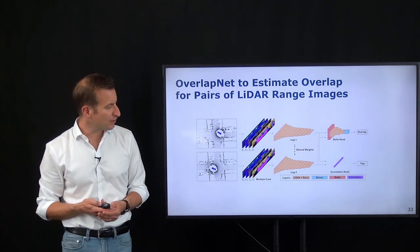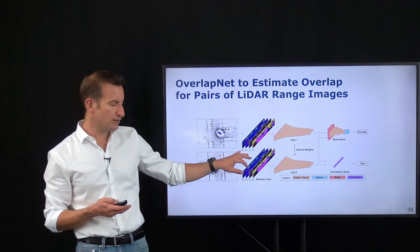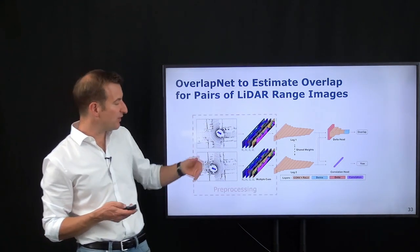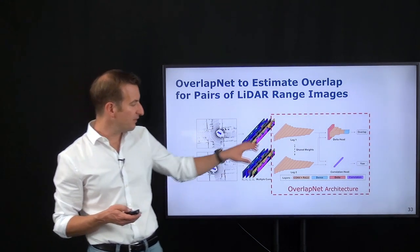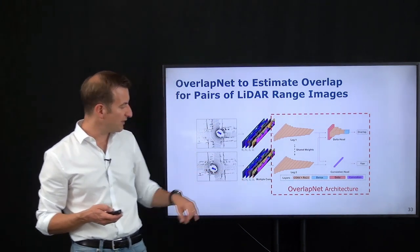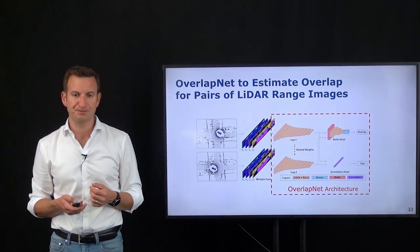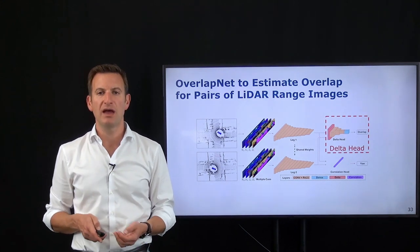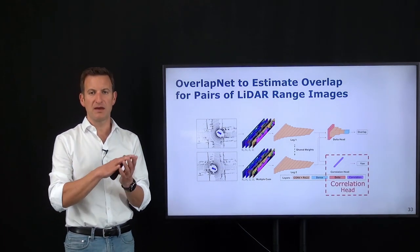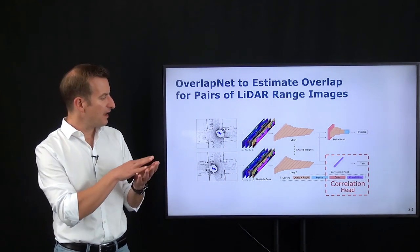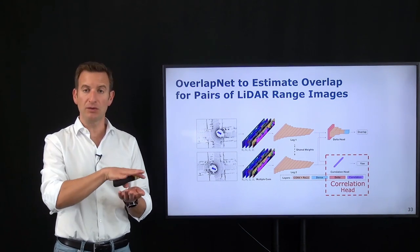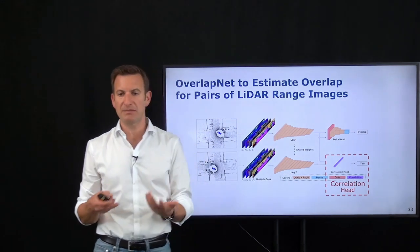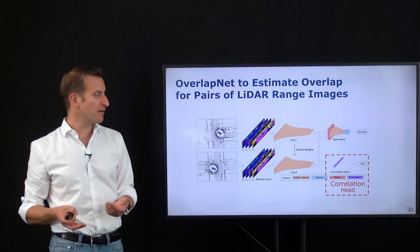The system works as follows: from the range image we extract normal information, laser intensities, and semantic information as a preprocessing step, and feed this into a CNN. The architecture has two legs with shared weights — one taking the first scan, the other taking the second scan — and has two outputs. A so-called overlap head estimates the overlap between the two scans. Additionally, a correlation head estimates the yaw angle offset between the scans — just the yaw, not pitch or roll — which is the most relevant orientation angle in the autonomous driving domain. This provides an initial guess for a loop closure that can then be verified using scan matching.